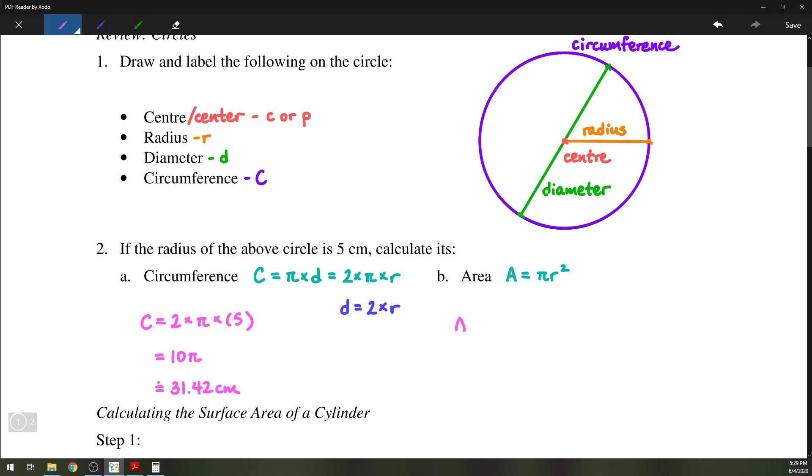On the other hand, we have area A equals pi R squared, so we will substitute 5 for the radius. So 5 squared, of course, is 25, so we have 25 pi. And if you evaluate using a calculator, you'll get 78.54 centimeters squared, if you round to the nearest hundredth.